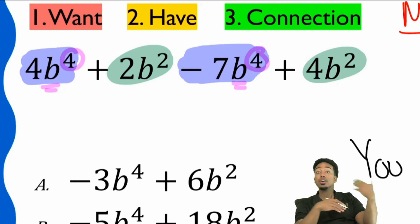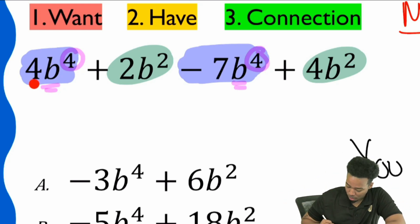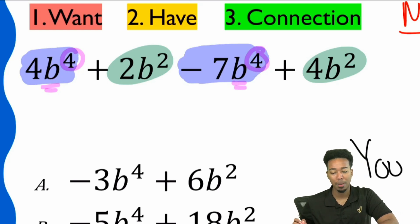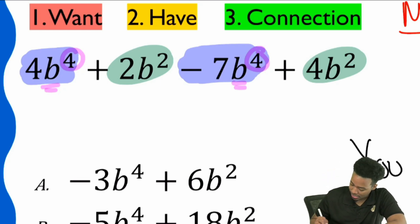So here, we are saying 4 of the B to the power of 4 minus 7 of those Bs to the power of 4. What is 4 minus 7, my party people? What is 4 minus 7? And hint, it's the same as 7 minus 4, just the opposite sign, negative 3. Yes. So that would be negative 3 B to the power of 4.